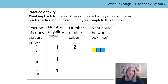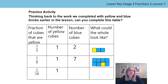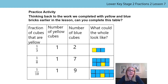We had a look at the first one together. The second one: 1/8 of the cubes are yellow. If there is one yellow cube then there must be seven blue. Your representation might look like this, but as long as there are eight cubes, one in yellow and seven in blue, then you're right. For the last example, 1/10 of the cubes are yellow. If there is one yellow cube then there must be nine blue cubes. Your representation could look like this. As long as there is one yellow and nine blue then you are right.